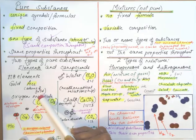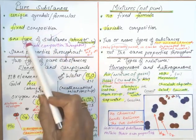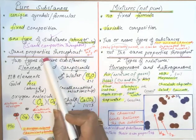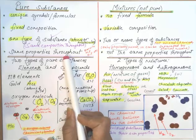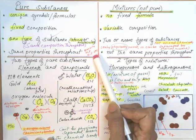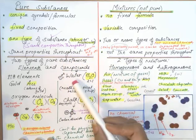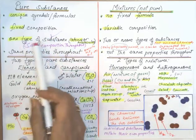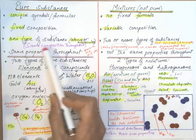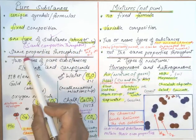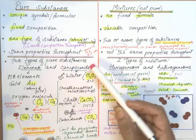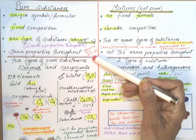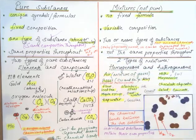If we talk about pure gold, it has a fixed composition — one type of atoms, which are gold atoms — and the same composition and same properties throughout: density, melting point, boiling point, etc. The same applies to water: fixed composition, one type of molecules which are water molecules, same composition throughout. No matter where you take a water sample, it will show the same density, same melting point, same boiling point, and other physical properties.